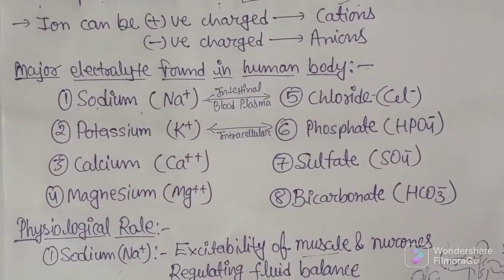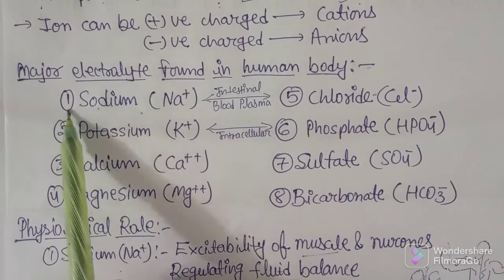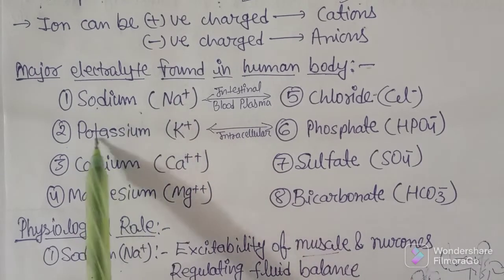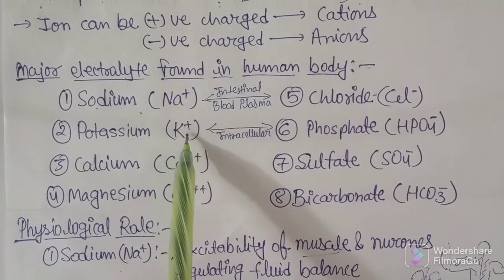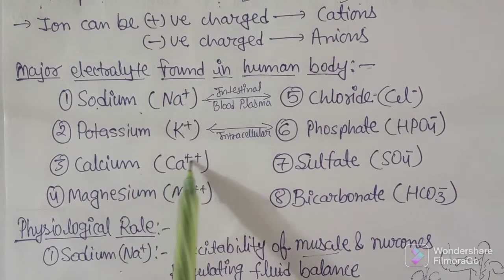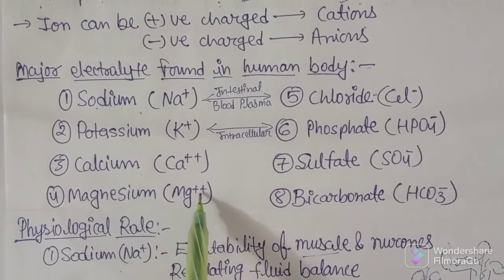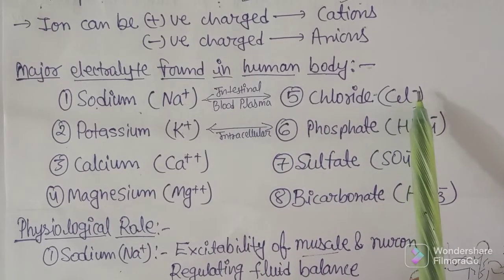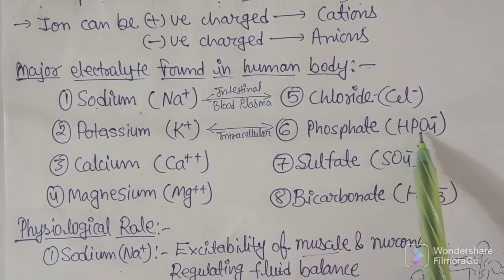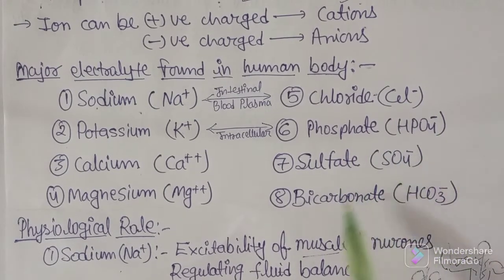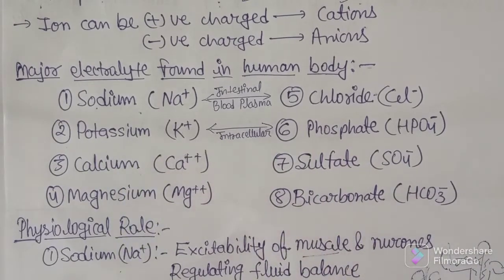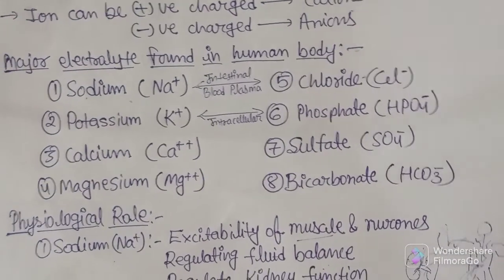The major electrolytes in the human body are: sodium (Na+), potassium (K+), calcium (Ca2+), and magnesium (Mg2+) — all cationic electrolytes — along with the anionic electrolytes: chloride (Cl-), phosphate (HPO4-), sulfate (SO4-), and bicarbonate (HCO3-).